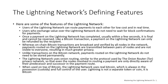Once a payment on the Lightning Network has completed — usually within a few seconds — it is final and cannot be reversed. Like a Bitcoin transaction, a Lightning payment can only be refunded by the recipient. Whereas on-chain transactions are broadcast and verified by all nodes in the network, payments routed on the Lightning Network are transmitted between pairs of nodes and are not visible to everyone, resulting in much greater privacy. Unlike Bitcoin transactions, payments routed on the Lightning Network do not need to be stored permanently, so Lightning uses far fewer storage resources and is cheaper.